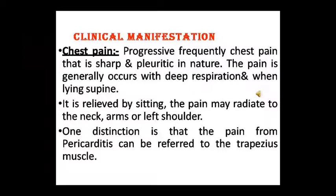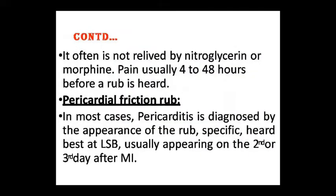In clinical manifestation, because friction is pain-causing, the first manifestation is chest pain. It presents as progressive, frequent chest pain of a very sharp and pleuritic nature. This pain generally worsens with deep respiration and in the supine position, but improves on sitting. The pain can radiate to the neck, arm, and left shoulder. A key distinction is that pain from pericarditis can be referred to the trapezius muscle. It is not relieved by nitroglycerin or morphine within 4 to 48 hours.